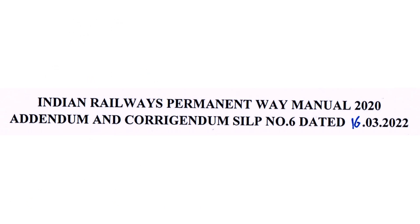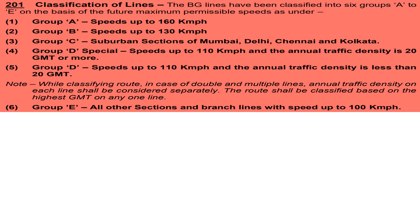Correction Slip number 6 was issued by Railway Board on 16th March 2022. CS 6 is related with para number 201, which deals with classification of lines on broad gauge. Earlier, broad gauge lines had been classified into 6 groups: A, B, C, D, D-Special and E.